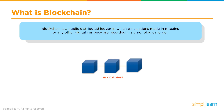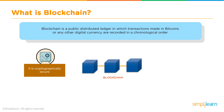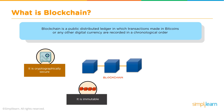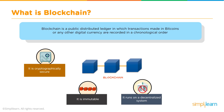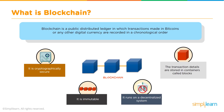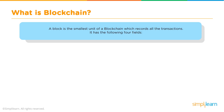Bitcoin runs on the underlying technology of blockchain. Blockchain is a public distributed ledger in which transactions made in Bitcoin or any other digital currency are recorded in chronological order. It is cryptographically secure — signed using your private key and shared on the network with the public key. It is immutable: any record or transaction added to the blockchain cannot be modified or altered. It is run by a decentralized system with no centralized authority, and transactions are stored in containers called blocks.